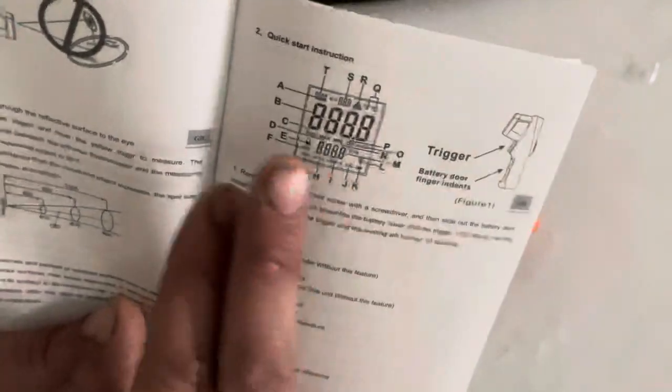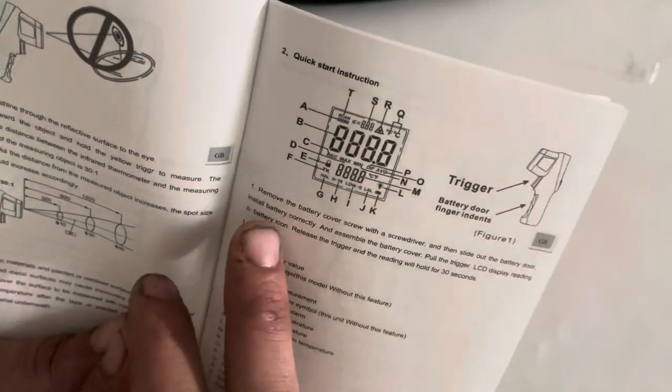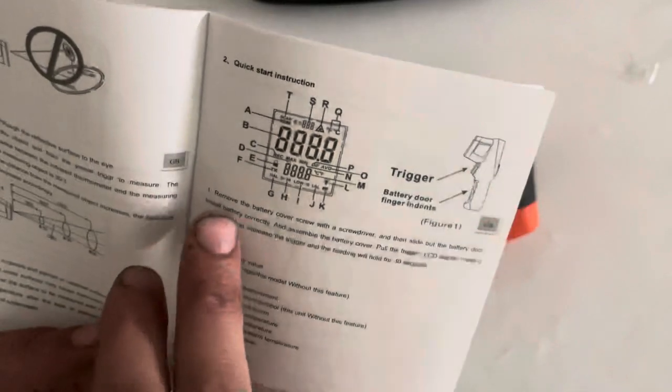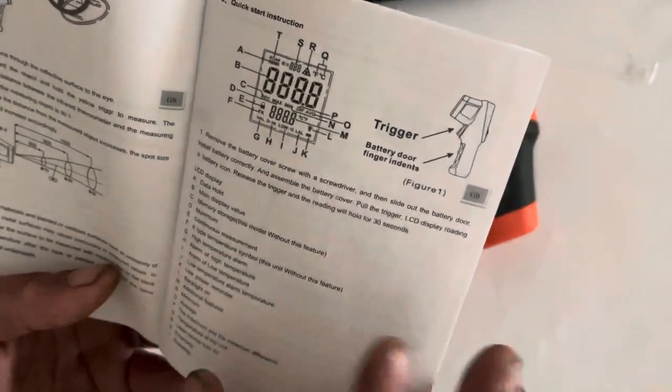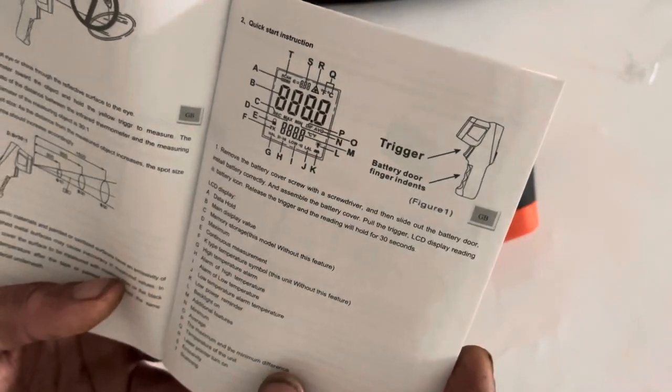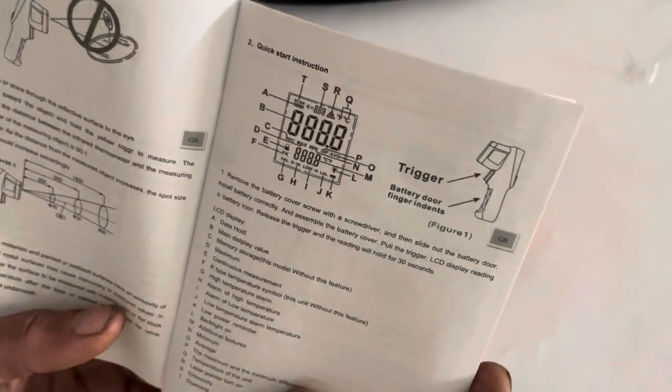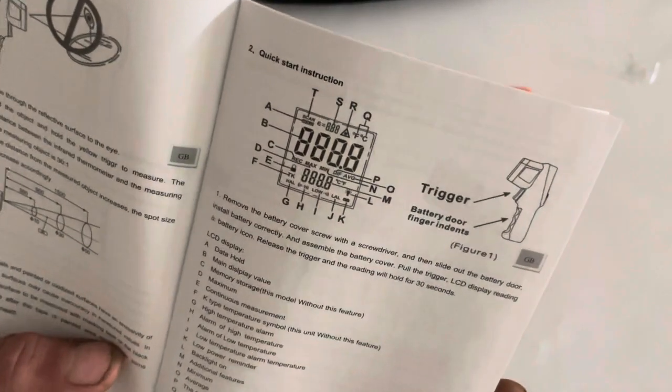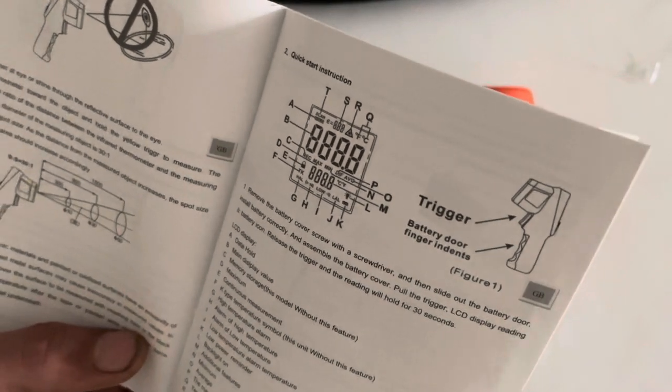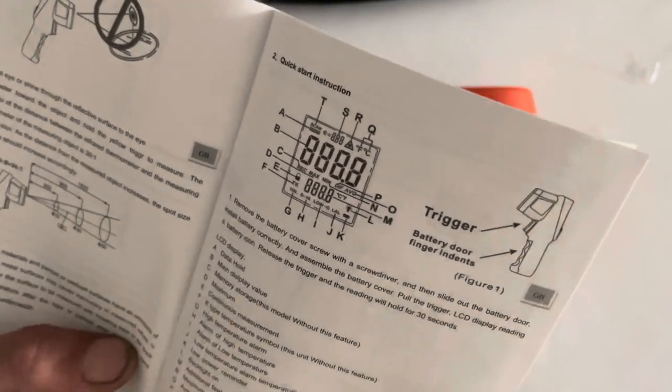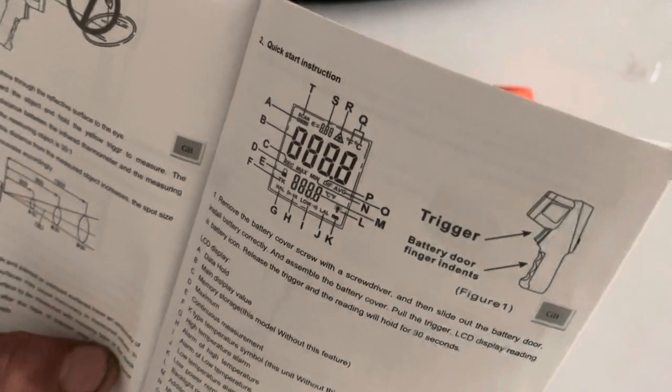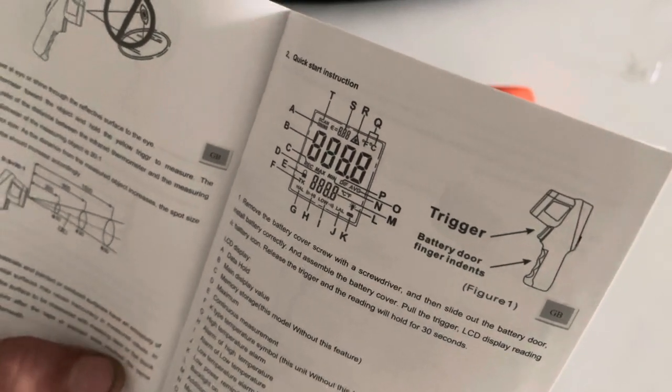Okay, here's what we need. Quick start instructions. Remove the battery cover with a screwdriver and then slide out the battery door. Install battery correctly, assemble the battery cover. Pull the trigger, LCD display reading and battery icon. Release the trigger and the reading will hold for 30 seconds.